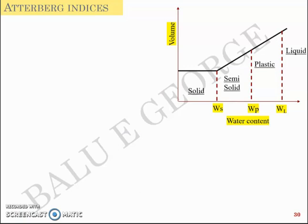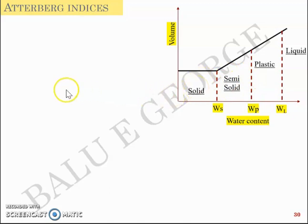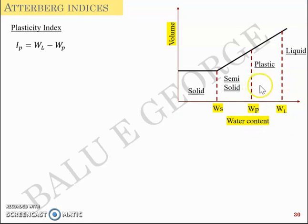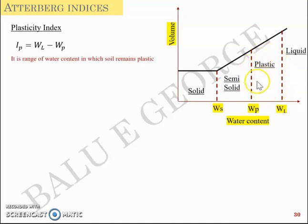Atterberg indices is the next topic. We have discussed Atterberg limits: liquid limit, plastic limit, and shrinkage limit. Liquid limit is the water content at which soil changes from liquid to plastic; plastic limit is where it changes from plastic to semi-solid; shrinkage limit is where soil changes from semi-solid to solid. The first Atterberg index is the plasticity index: IP = wL - wP (liquid limit minus plastic limit), which represents the range of water content in which the soil remains plastic.